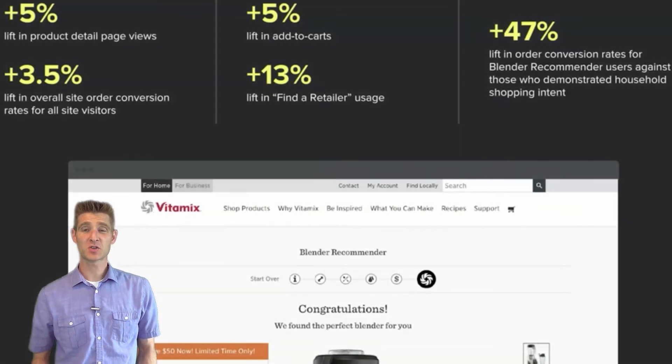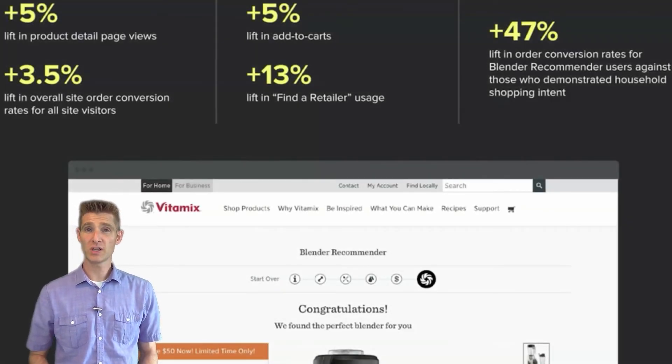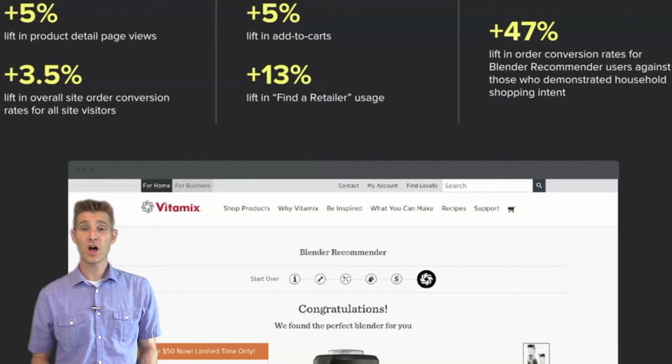As a result of using this self-selection strategy, they were able to get a 47% lift for those visitors that showed a real intent for household shopping. Not only that, a lot of other metrics increased overall as well.